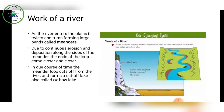A loop is a shape produced by a curve that bends round and crosses itself. To explain simply, imagine writing the number 8 in a sleeping position — it forms a large curve, turns, twists, and crosses itself. That is called the loop. Due to continuous erosion and deposition along the sides of the meander, the ends of the loop come closer and closer.